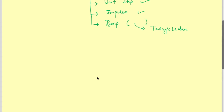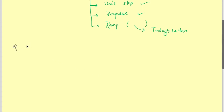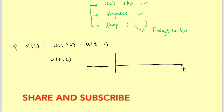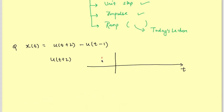My first problem is: if x(t) is represented as x(t) = u(t+2) minus u(t-1), how will this signal look? The term u(t+2) will look something like this — it will start from t = -2.